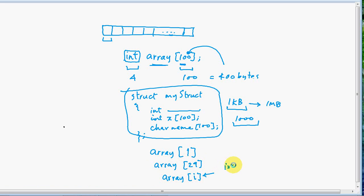If i is equal to 29, you will be accessing element number 29. That's fine. But if somehow your i changed to 110, then you will be accessing the 110th element of this array, which actually does not exist.